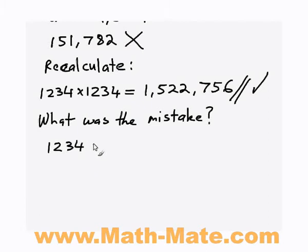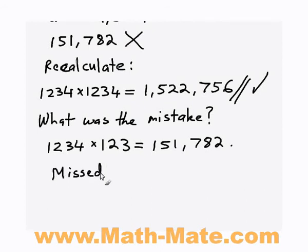So in this case, what is very common is that you can sometimes forget to enter digits in your calculator. So in this case, if you multiply 1234 by 123, you get the first answer we got which was wrong because we'd forgotten to put the 4 in at the very end of the second number.